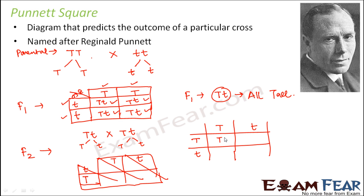So now you can actually find out all the possibilities. These two combined will be capital T capital T. These two combined will be capital T small t. These two combined again will be capital T small t. And this and this combined will be small t small t. So these are the possible outcomes of the cross between the heterozygous F1 individuals, right?